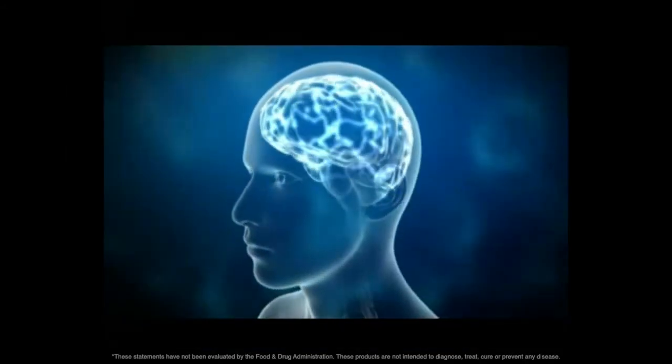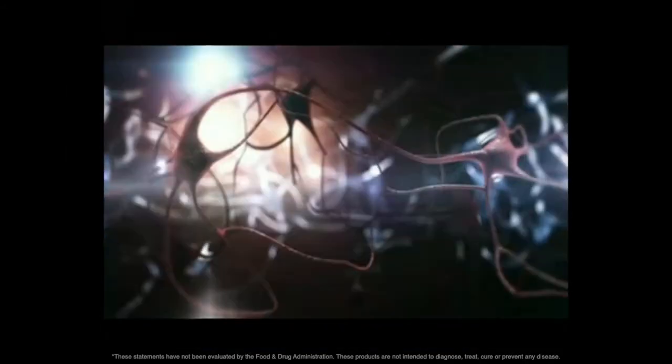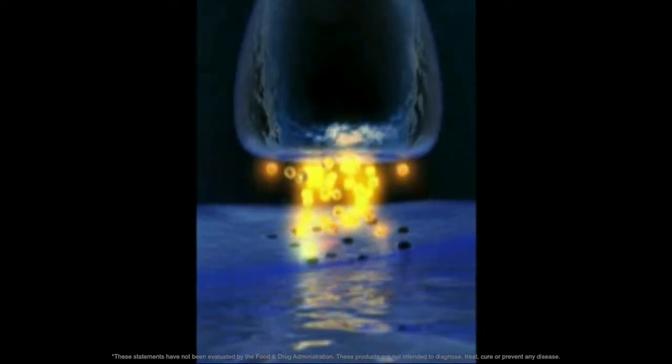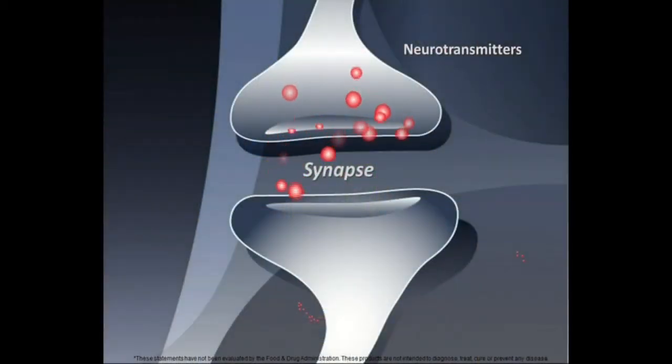Mental health depends on the ability of neurons in the brain to exchange information. This communication is mediated by molecules called neurotransmitters, which carry signals from one neuron to the next in a space called the synapse.